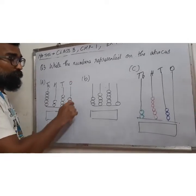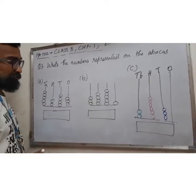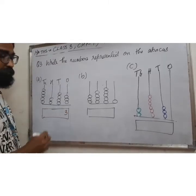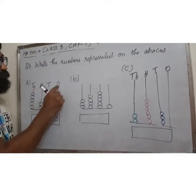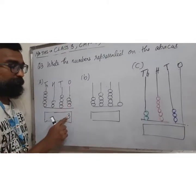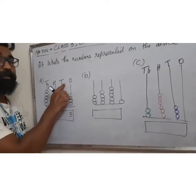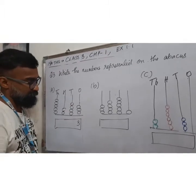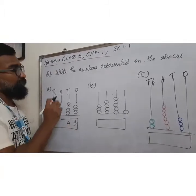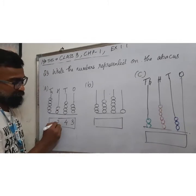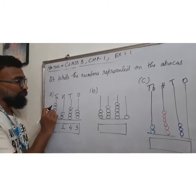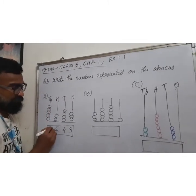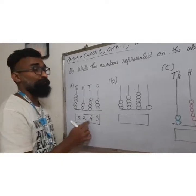If I am talking about 1's place, 1, 2, 3. So 0 here, 1, 2, 3. Three beats. Tens ke ghar pe how many beats? 1, 2, 3, 4. Hundreds mein 1, 2. Thousands mein 1, 2, 3, 4, 5. So it's 5,243.